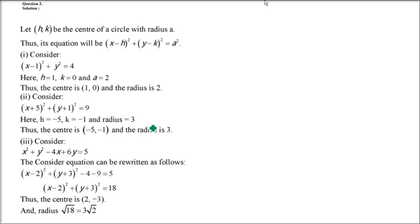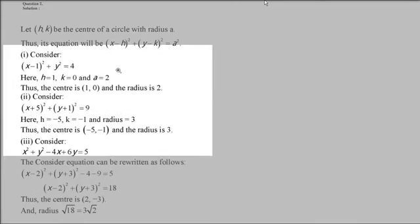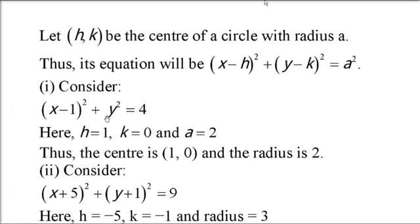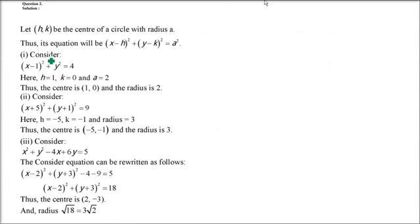Question number 2 has four parts. This is the converse of question 1 — we are given the equation and we have to find the center and radius. We need to rewrite each equation in the form (x - h)² + (y - k)² = a².